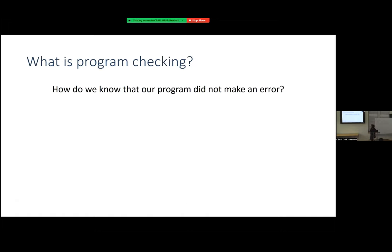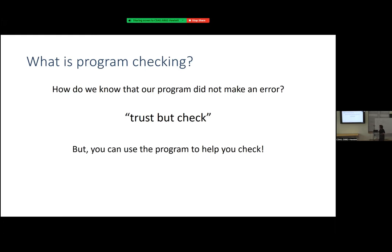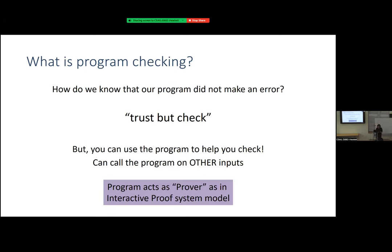Program checking was this new model proposed to understand if your program is making an error. The notion of trust the program but check. You can use the program to help you check — you view the program as a black box, but somehow use it to actually help you check the answers. You call the program on other inputs, so the program is behaving as a prover in the interactive proof system model, which was just beginning to be studied at that time. In the early-to-mid 80s we were just beginning to understand that interactive proofs were a really cool thing, though we hadn't yet established that IP equals PSPACE.